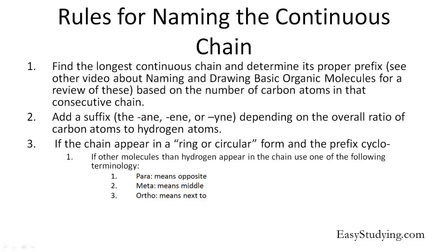The alkane has all single-bonded carbons. The alkene has one double-bond carbon. And the alkyne group has a triple bond in the carbon structure. If the chain appears in a ring or circular form, the prefix we use is cyclo — as in a cycle, as in a circle. Cyclo molecules are known by a specific symbol that is commonly used, showing it's a cyclo group.